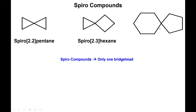Here you have five carbons on the left side and four carbons on the right side, so this is spiro 4.5. Adding four and five together plus one more gives ten, so this is spirodecane.